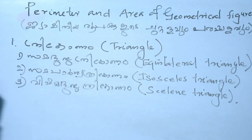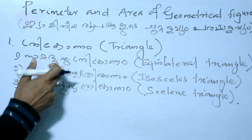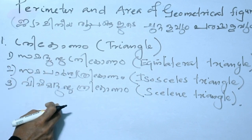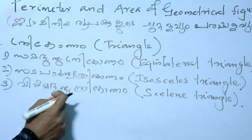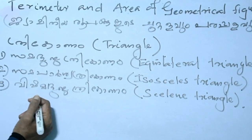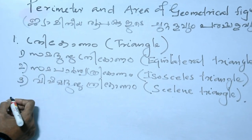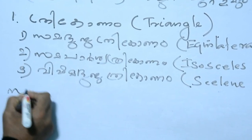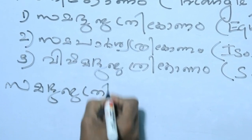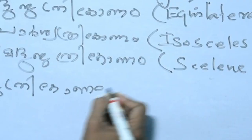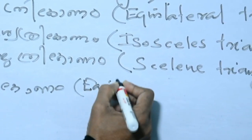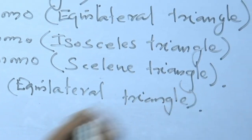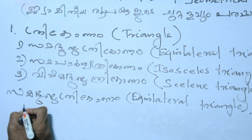So the three types of triangles: the first is the Samafuja Trigone — 3 sides equal, that is the Equilateral Triangle. The third is the Vishama Fuja Trigone, that is the Scalene Triangle.